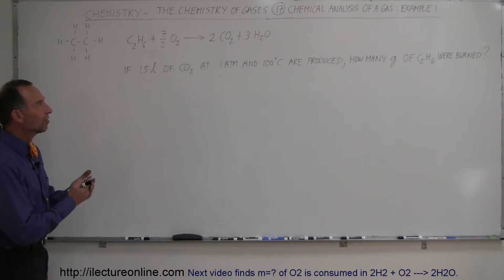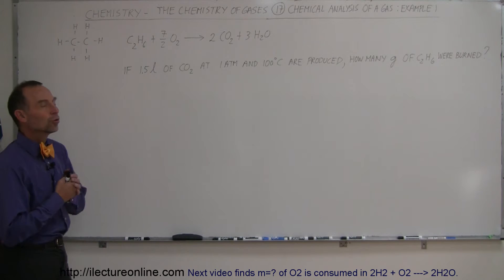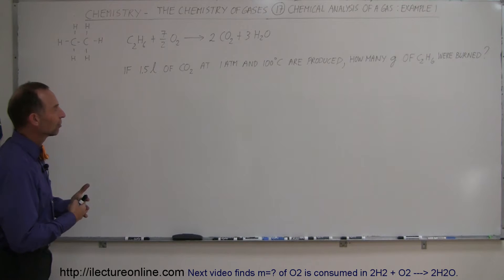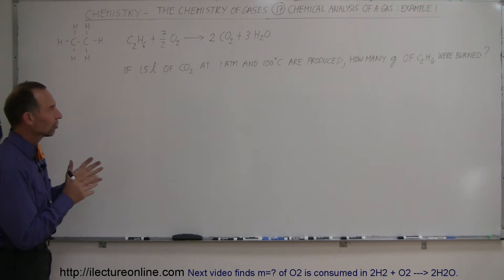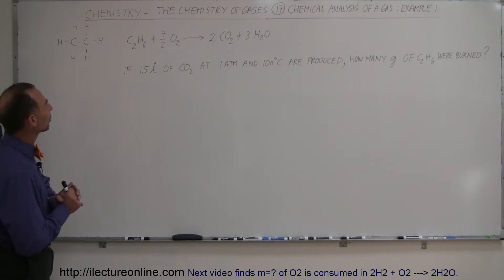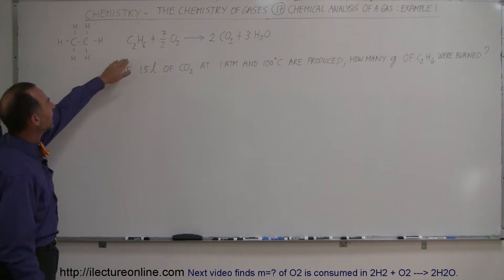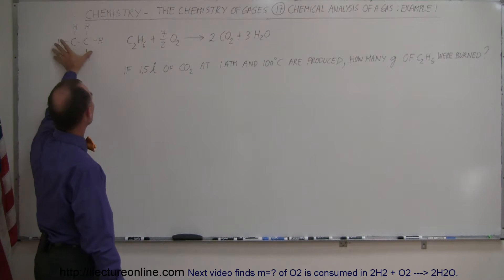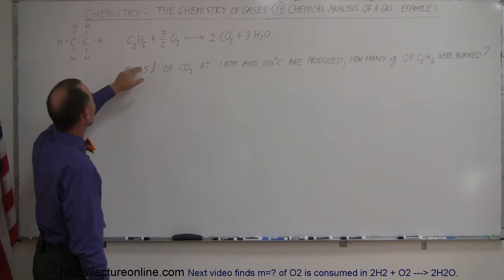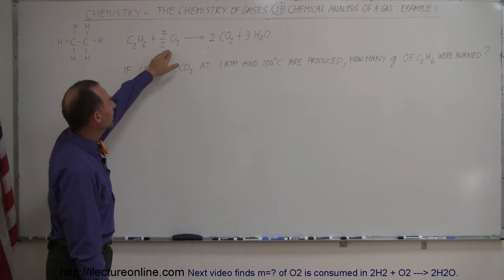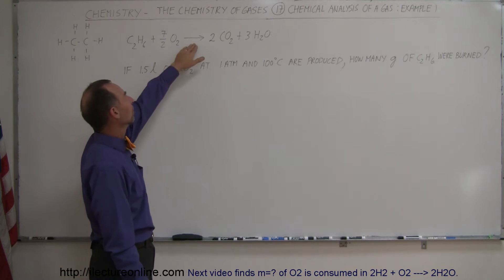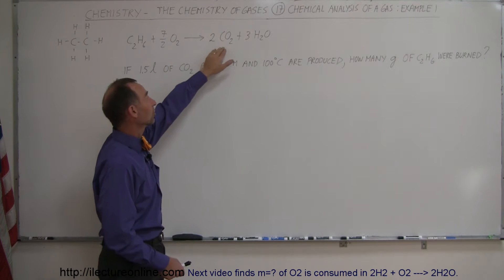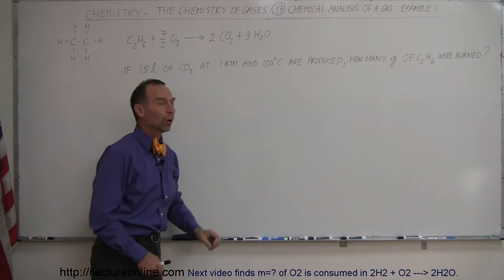Now that we've learned something about density, we're going to use that to do chemical analysis of a gas. In our first example, we're going to take ethane, which is C2H6 — that's what the molecule looks like — plus enough oxygen. When we combust that, this is called the combustion reaction, we end up with carbon dioxide and water vapor.